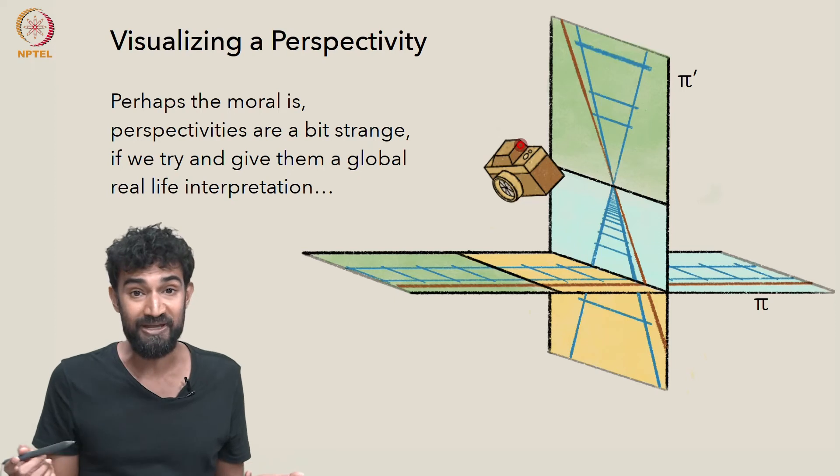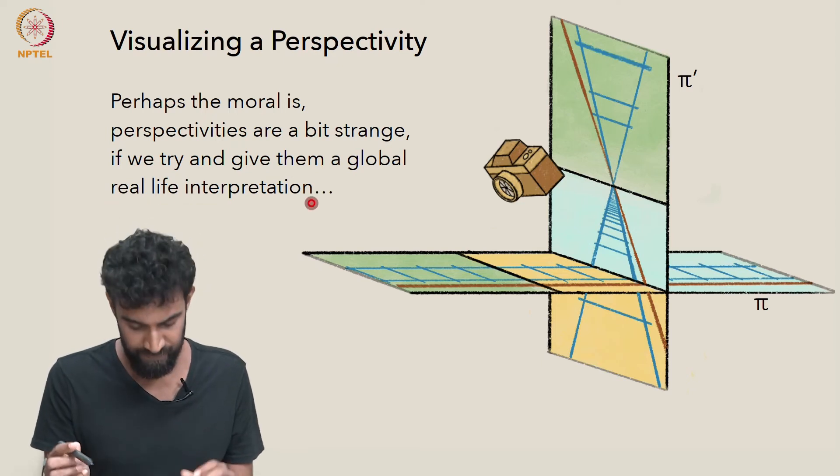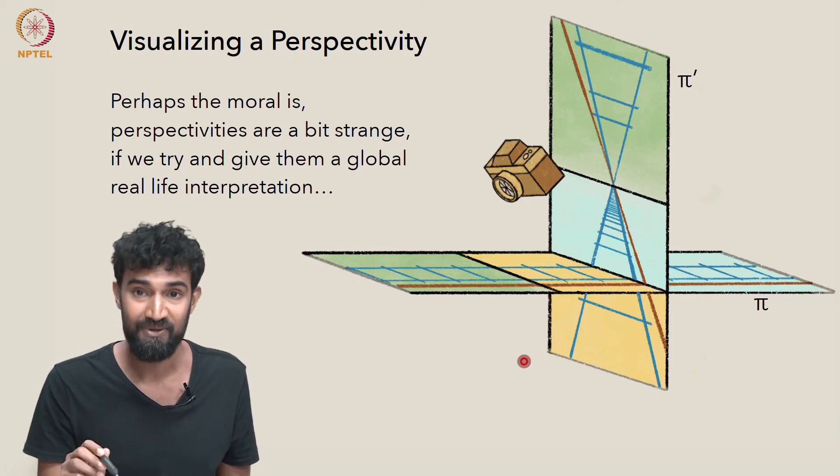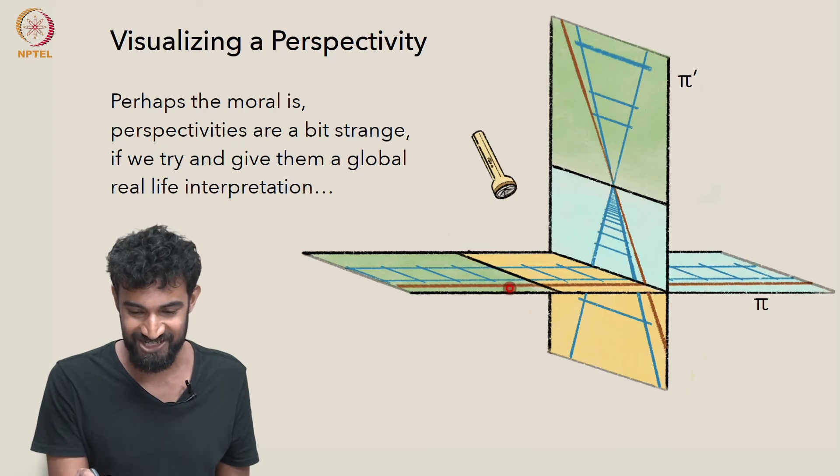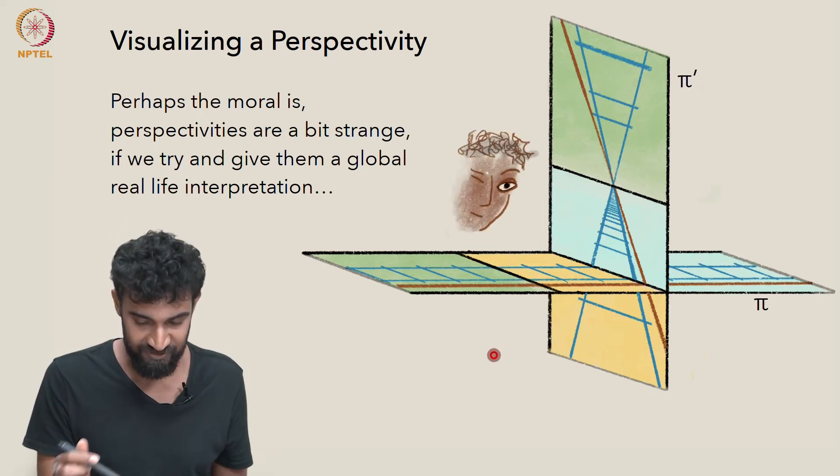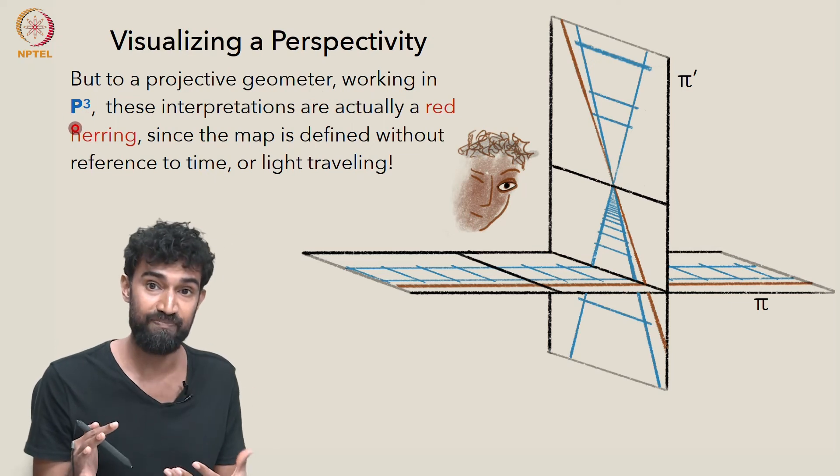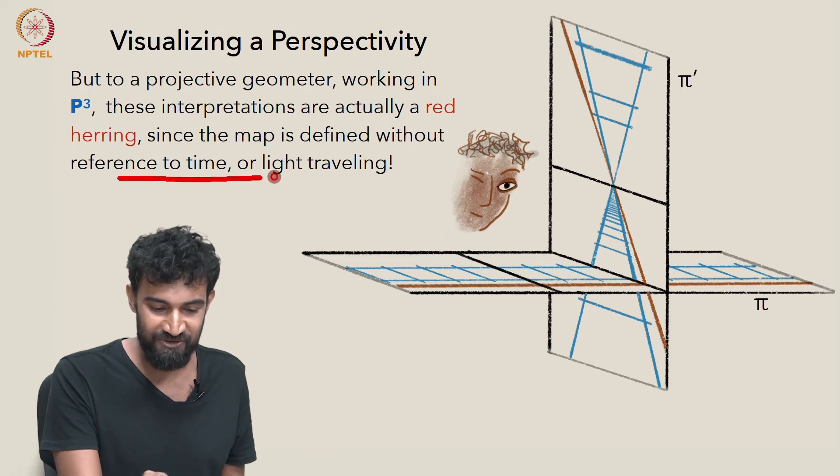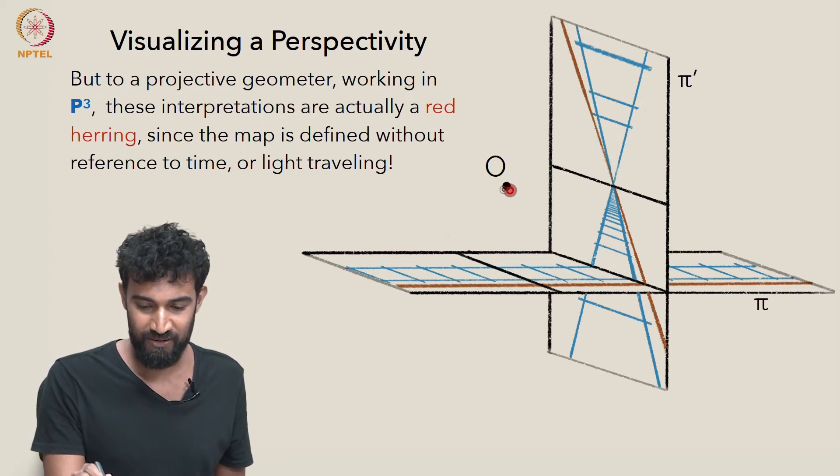So maybe the moral of the story is just that perspectivities are kind of strange if we try and give them a global, real-life interpretation. By global, I mean looking at its behavior on all of pi and all of pi prime, not just a small portion. It sometimes looks like a camera, sometimes looks like a flashlight, sometimes looks like our eye doing a perspective drawing. So on the other hand, to a projective geometer working in P3, whose primary setting is P3, all these interpretations are actually just a red herring, they're misleading, because the map is defined without reference to time or light traveling or an order of points being arranged.